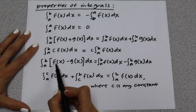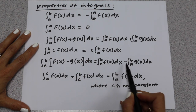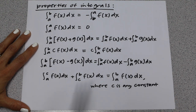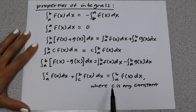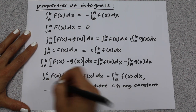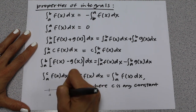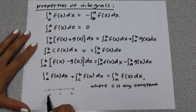For a difference of functions, you can take the integral of the first minus the integral of the second. Finally, the integral from a to c of f(x) plus the integral from c to b of f(x) equals the integral from a all the way to b, where c is any constant. Think of this like segment addition from geometry: a to c plus c to b equals a to b.